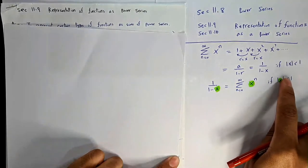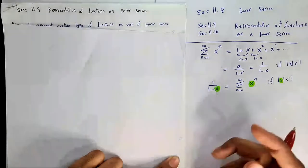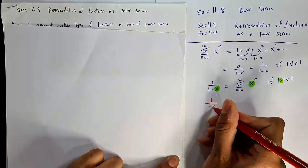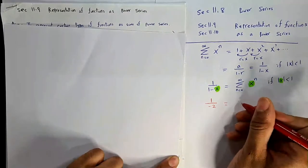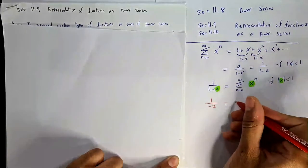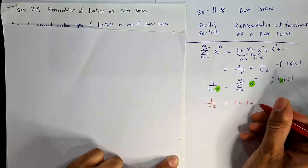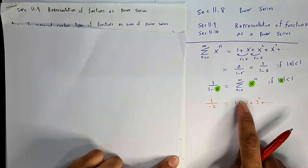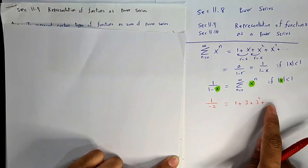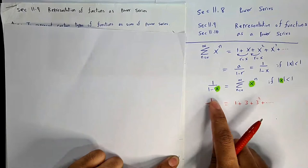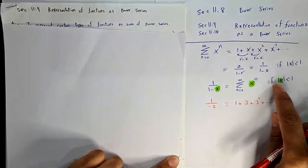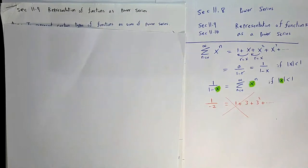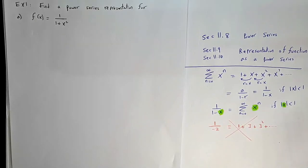For example, if somebody substitutes x = 3, which is outside the domain, you get 1/(1-3) = -1/2 on the left, but on the right you get 1 + 3 + 9 + ... which is adding infinitely many positive numbers to get a negative result. This mistake happens because you ignored the convergence condition. Please do not do this.